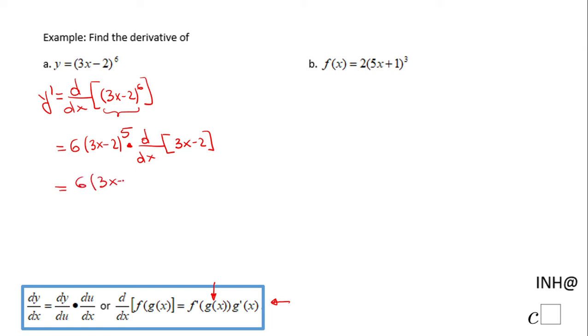So let me copy the first part and the last part here. The derivative with respect to x of 3x - 2 is nothing else than 3. And the last step here will be to simplify, and this is the final answer: 6 times 3, which is 18, times (3x - 2) to the fifth power. This is the derivative of y, y prime or dy over dx.